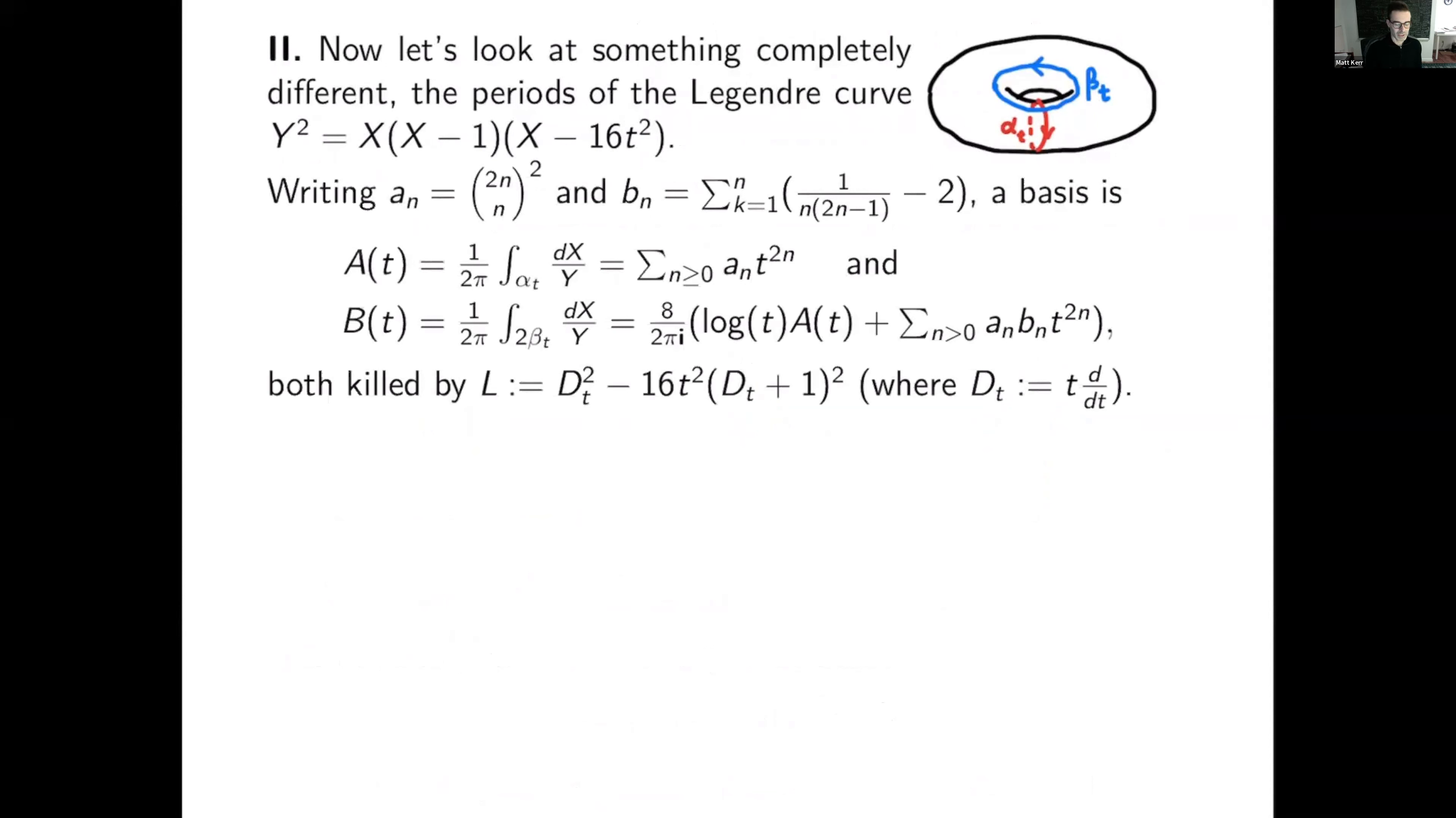Now we have well-known formulas for periods of this thing. So here's the Picard-Fuchs operator, it's a sort of hypergeometric pullback situation, and here's the first period, where a_n is two n choose n squared. The second period, of course, has to be nastier because it has to change by a multiple of a of t when you go around the origin, t equals zero, which you're doing Dehn twist there.